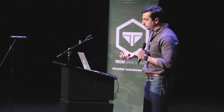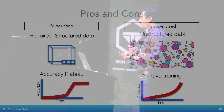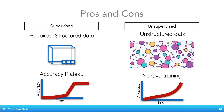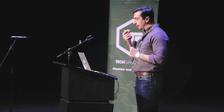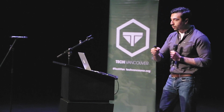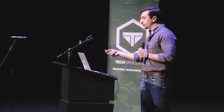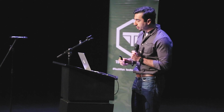When it comes to unsupervised machine learning, you don't really need structured data. You can feed it any type of unstructured data, and essentially just chug all the data — the more you have, the better — into the machine. What you see is that there's no overtraining. With a lot of unsupervised machine learning algorithms, there is no overtraining, no accuracy plateau. There will be diminishing returns, but you will find what we call conditional outliers that are within your data. So they both have their own pros and cons depending on the type of problem that you want to solve.